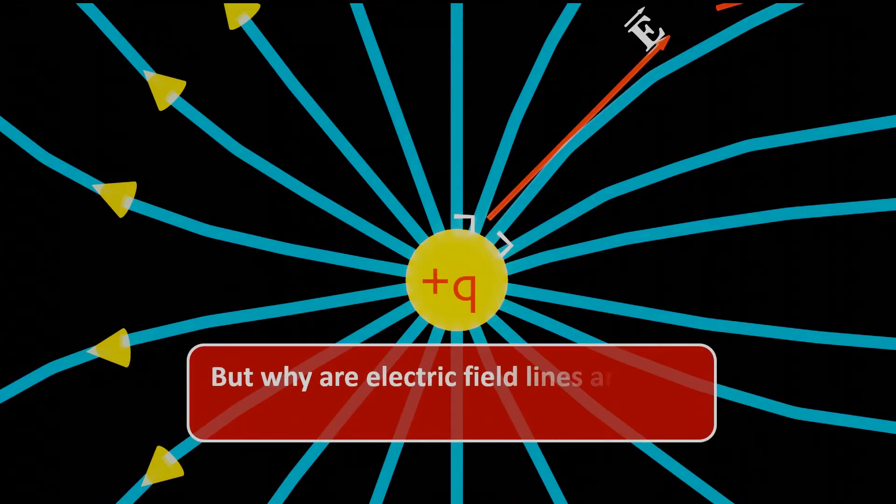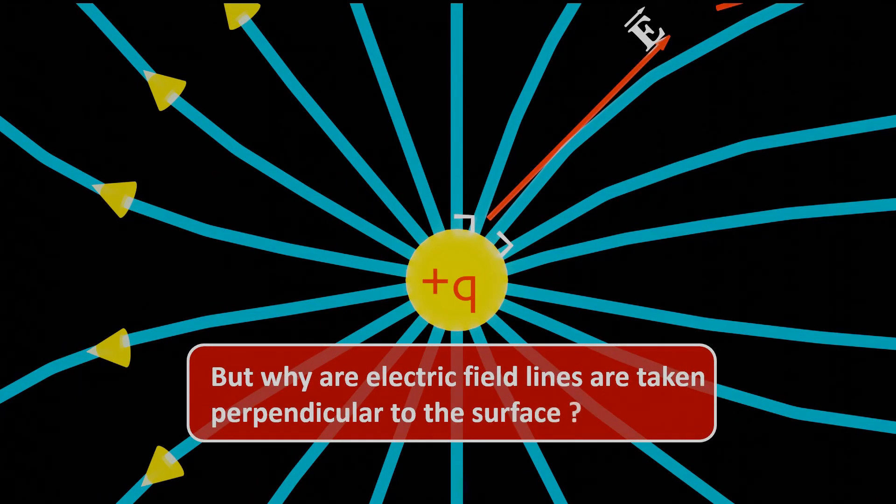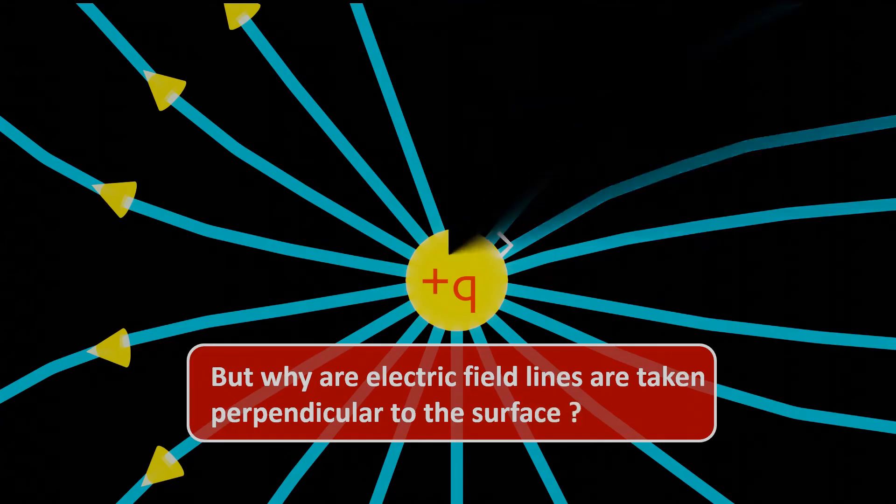But why are electric field lines taken perpendicular to the surface? To understand this, let's take a charged sphere and assume that the electric field line is not at 90 degrees to the surface, but at some angle theta. If that's the case, we will have two components of the electric field, E cos theta and E sin theta.